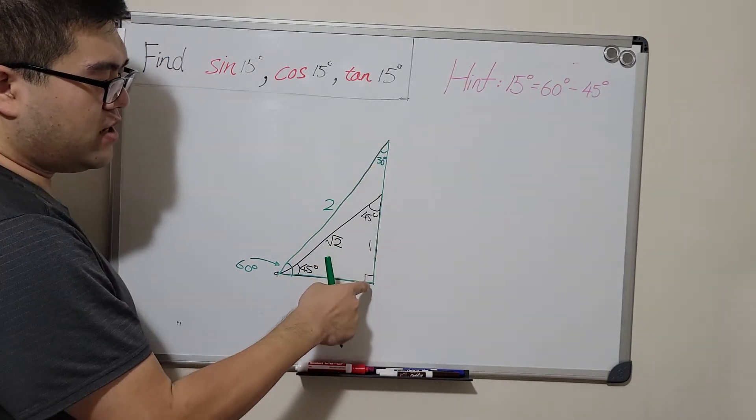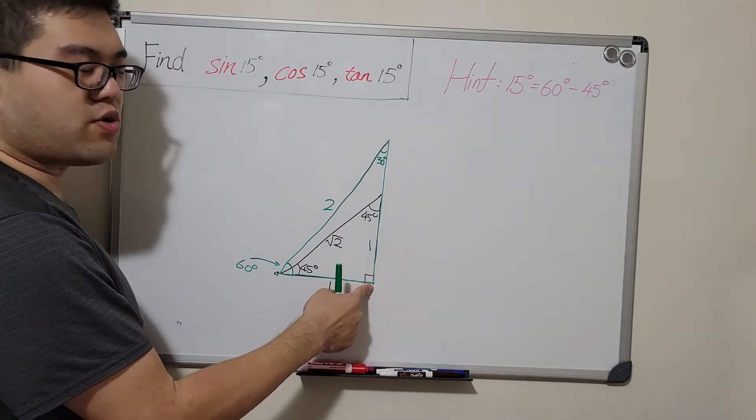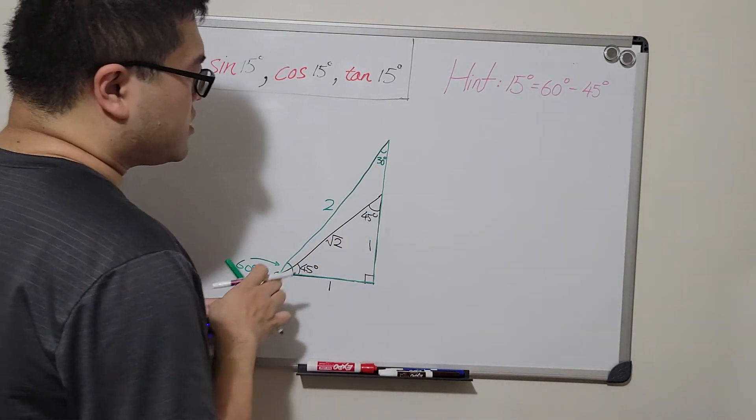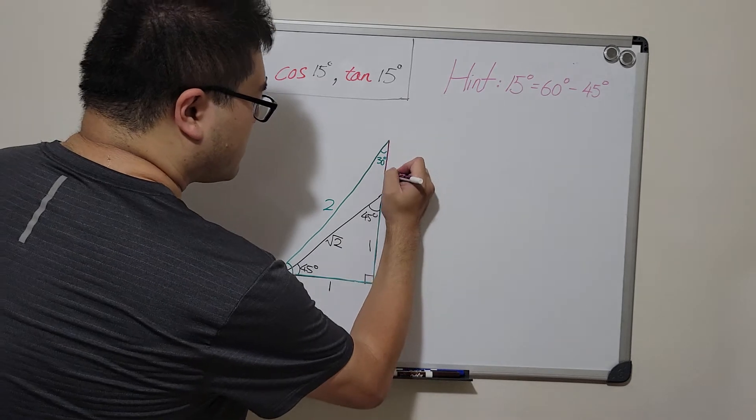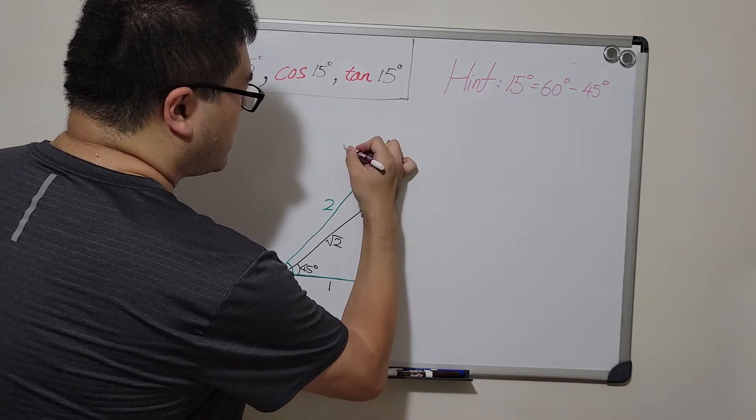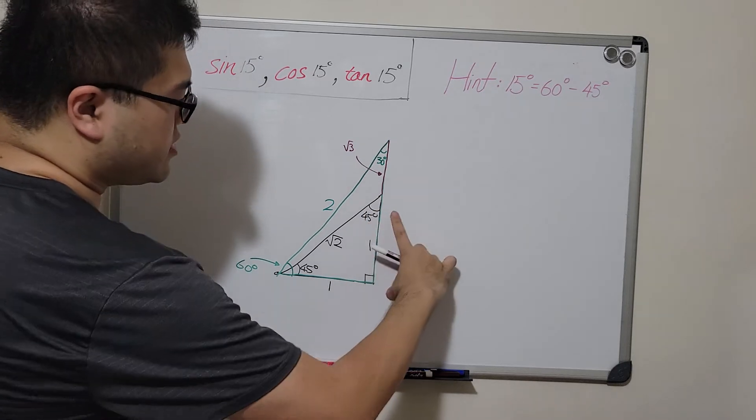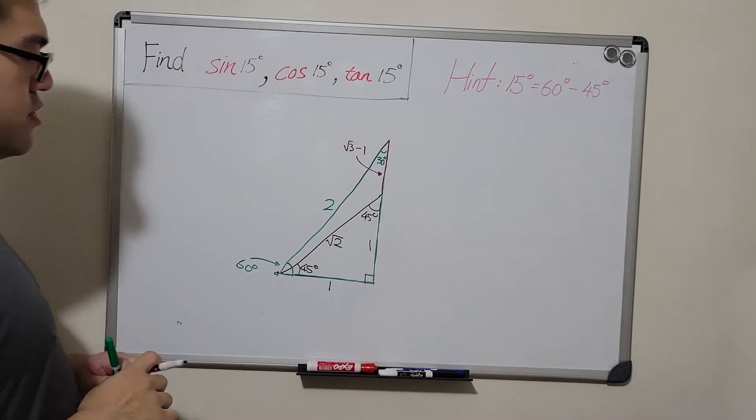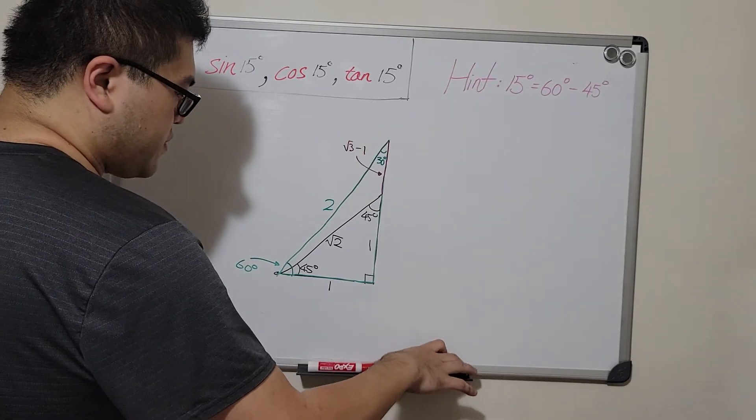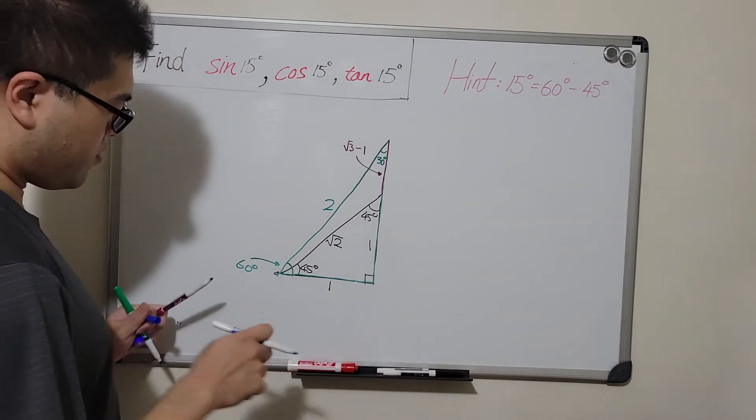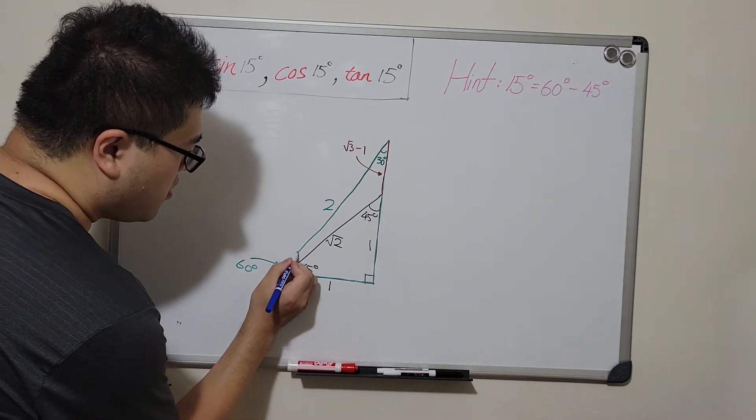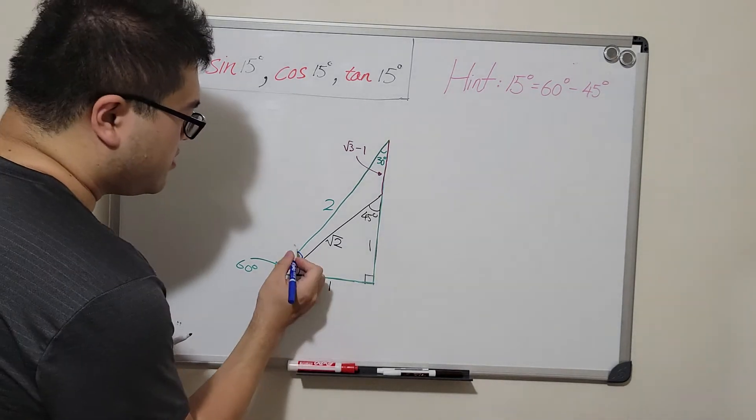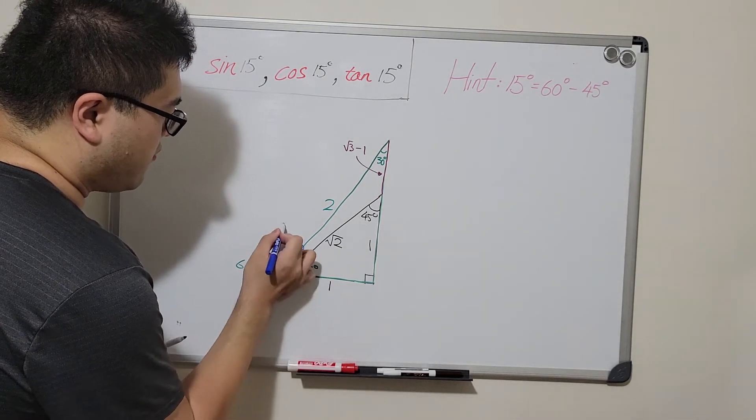And since the whole length is square root of 3, this part here should be square root of 3 minus the shorter leg here, which is 1. And notice we get this angle here, which is the difference between the green angle and the black angle, giving us 15 degrees here.